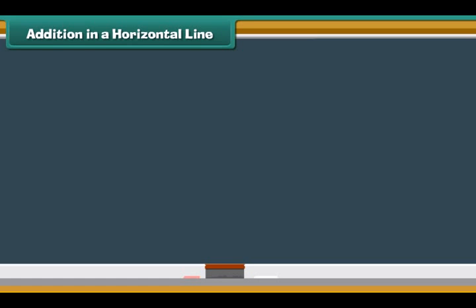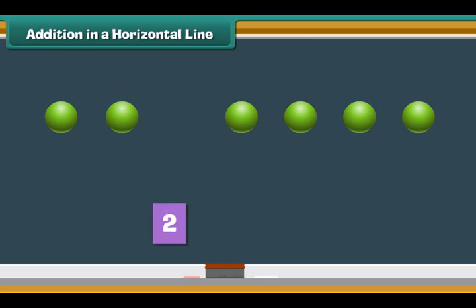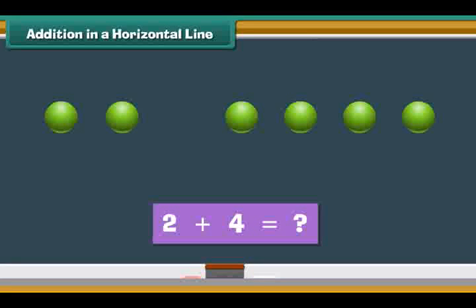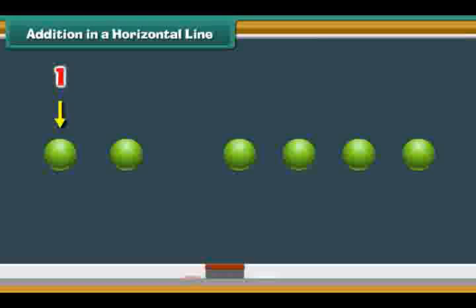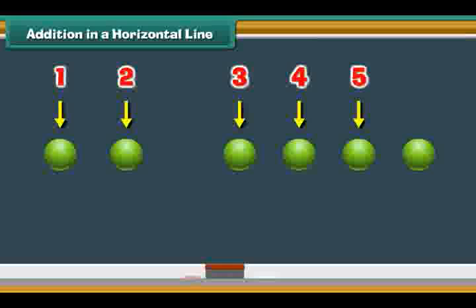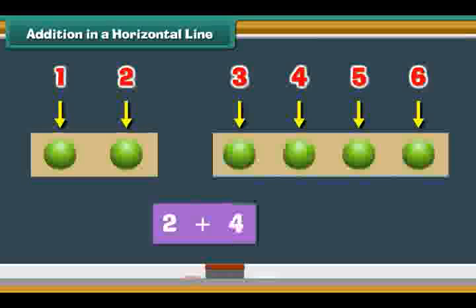Let us now use dots to add numbers horizontally. Look at the screen. There are two dots on the left and four dots on the right. What is two plus four? Count the total number of dots: one, two, three, four, five, six. Therefore, two plus four is six.